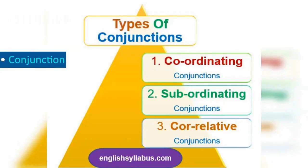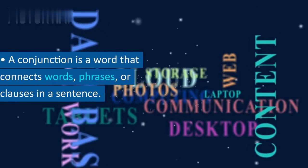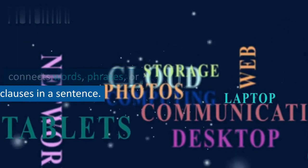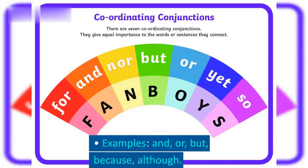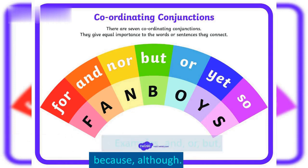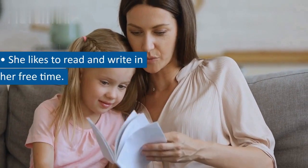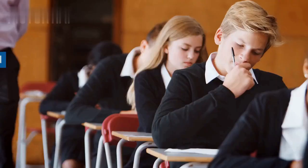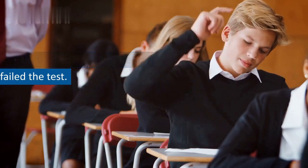Conjunction. A conjunction is a word that connects words, phrases, or clauses in a sentence. Examples: and, or, but, because, though. She likes to read and write in her free time. He studied hard, but he still failed the test.